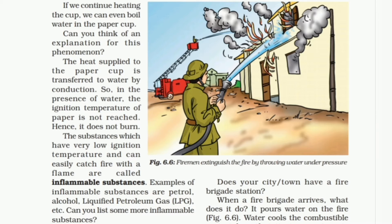The substances which have very low ignition temperature and can easily catch fire with a flame are called inflammable substances. We have to underline this point and keep in mind this definition. Examples of inflammable substances are petrol, alcohol, liquefied petroleum gas (LPG), etc. Can you list some more inflammable substances? You should find out more examples on your own.